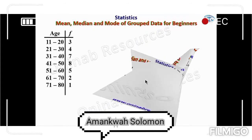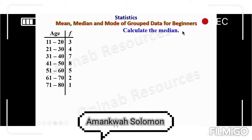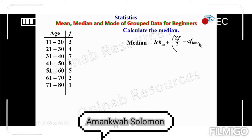We go ahead to calculate the median. The formula for median is: lower class boundary of the median class plus open bracket — summation of frequency divided by 2, minus the cumulative frequency before the median class — everything divided by the frequency of the median class, times w, which is the class width. We will add columns for lower class boundary and cumulative frequency, then find the median class.